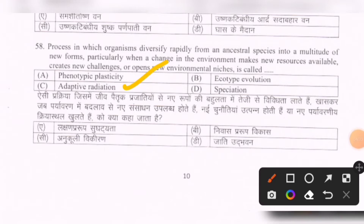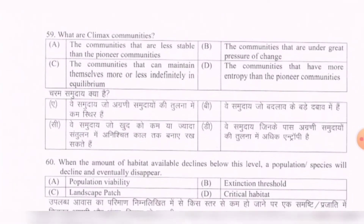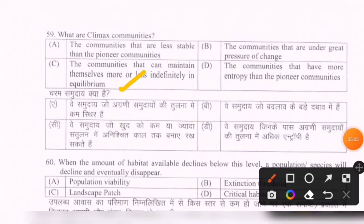Next question: What are climax communities? Options are: communities that are less stable than pioneer communities; communities under great pressure of change; communities that can maintain themselves more or less indefinitely in equilibrium; communities that have more entropy than pioneer communities. The correct option is C — communities that can maintain themselves more or less indefinitely in equilibrium.